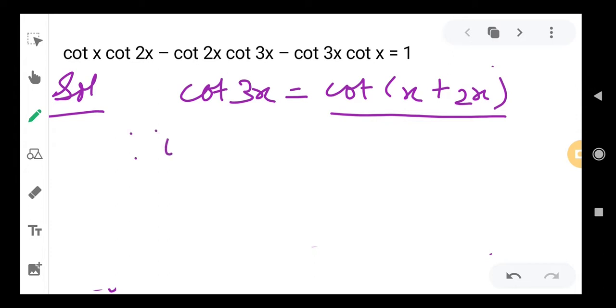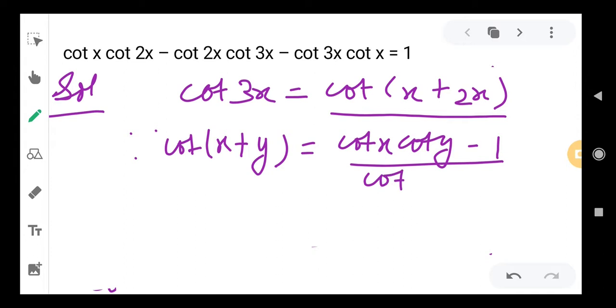Since cot(x + y) equals (cot x cot y - 1) divided by (cot y + cot x), now use this formula in this equation, so cot 3x will be...